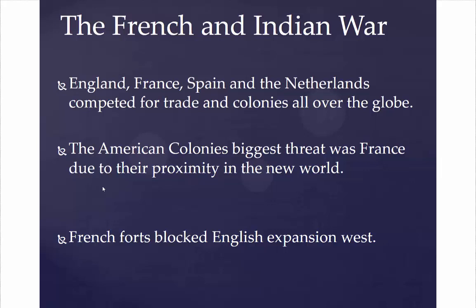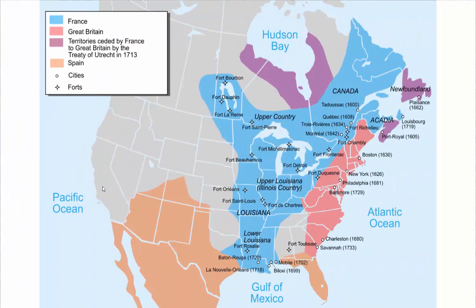Before this war, France would really be considered probably the biggest threat to the American colonies simply as a result of their proximity in the New World. French territory and French forts blocked expansion of the British colonies westward. This map shows what the New World looked like just about at the time leading up to the American Revolution, around 1750.